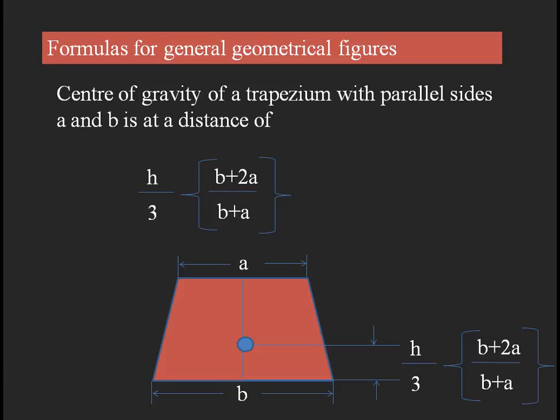For a trapezoid, the center of gravity lies on a vertical line passing through the midpoints of the bottom side and top side. From the base, it is at a distance of h/3 × (b + 2a)/(b + a), where b is the base side and a is the top side. By knowing the height h, we can find the center of gravity on the vertical line.